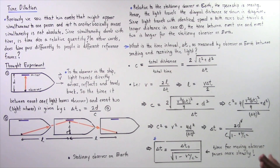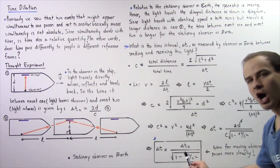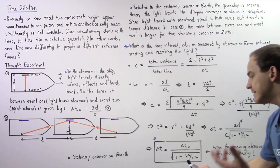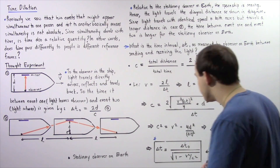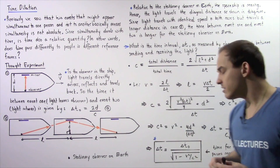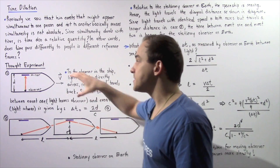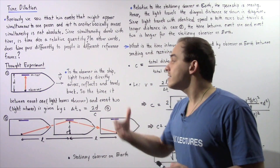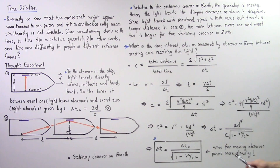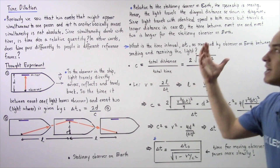Notice this important point: because V is always less than C, the quantity V squared over C squared is always less than 1. So 1 minus that quantity is less than 1, and its square root is also less than 1. Therefore delta T is always greater than delta T naught — the time elapsed for the person inside the spaceship is always less than the time elapsed for the stationary observer on Earth. Time for the moving observer always passes more slowly with respect to the stationary person, and this is known as time dilation.